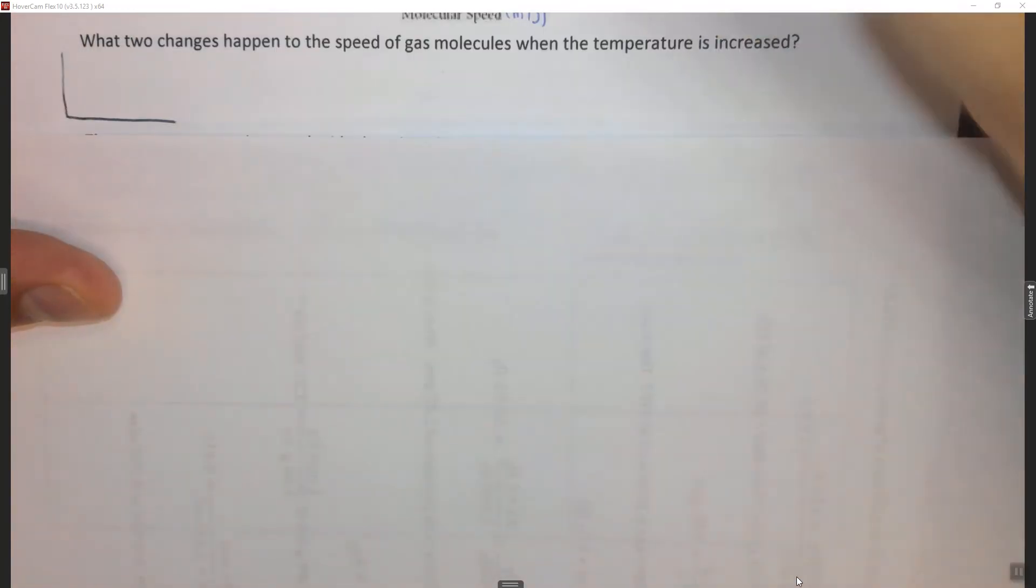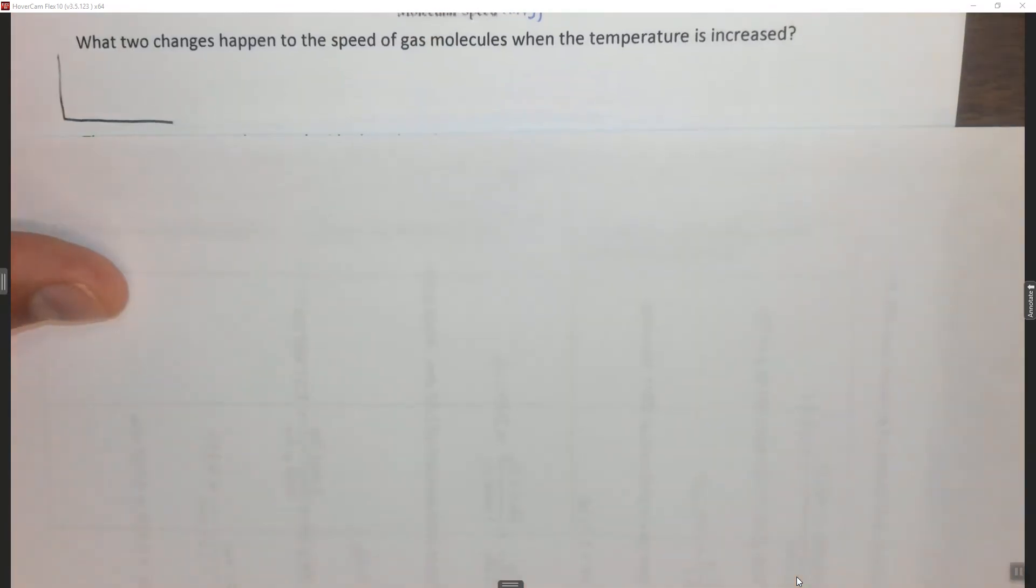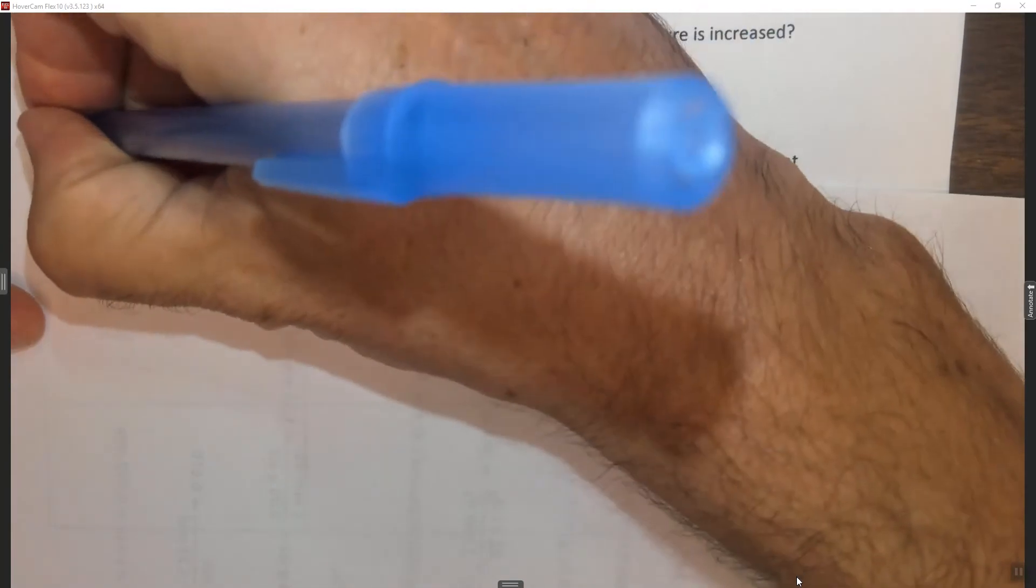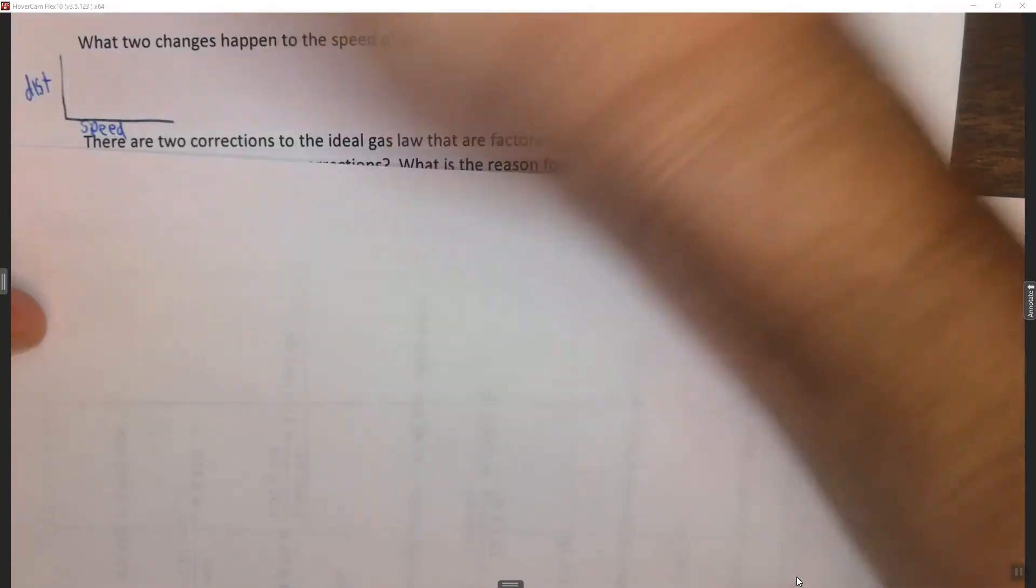So we're gonna use the same graph here where we have the molecular speed on the x-axis, so I'm just gonna write it as speed down here, and the distribution up here.